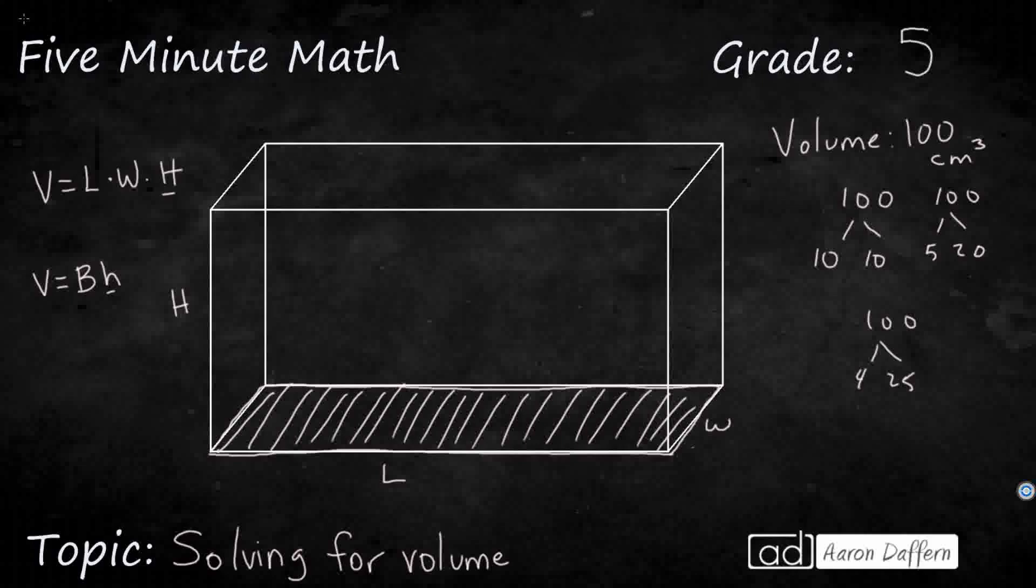And then so if we are wanting to think of the base times the height, well, that's easy. It would just be any of these two numbers. We could say the base is 10 and the height is 10. Or we can say the base is 20 and the height is 5. We could say the base is 25. Typically, those are going to be bigger. The height is 4. So those could be the dimensions.